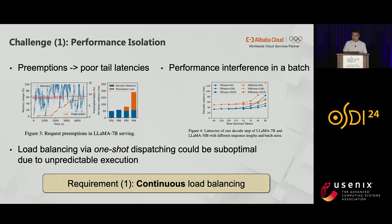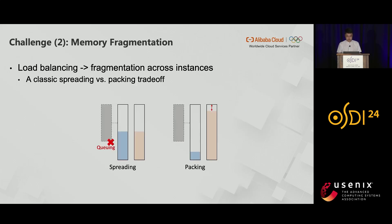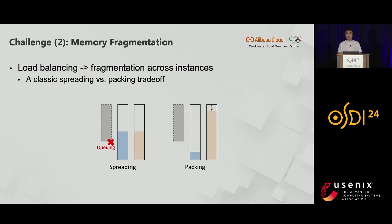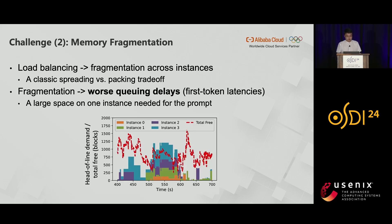That means we require continuous load balancing even after requests are dispatched. But is that enough? No. Load balancing also means memory fragmentation across instances, because we tend to spread the cluster's free memory space across multiple instances. This is a classic spreading versus packing trade-off in scheduling problems. Fragmentation could lead to worse queuing delays, especially for requests with long inputs, because a large contiguous space on one instance is needed to accommodate the cache of the whole prompt.